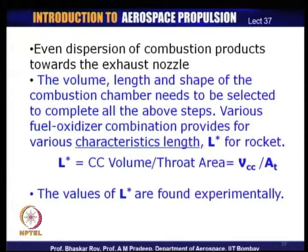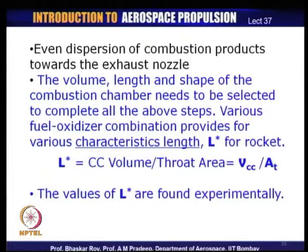The volume, length, and shape of the combustion chamber also need to be selected in rocket design. Various fuel-oxidizer combinations provide for various characteristic lengths. The characteristic length of a rocket combustion chamber is defined as L-star — simply the combustion chamber volume divided by throat area A_t. The volume of the combustion chamber divided by throat area gives the characteristic length of the rocket.